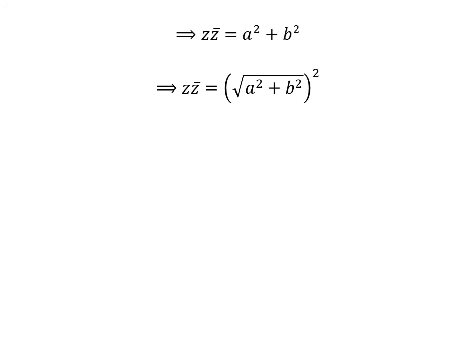The above statement can be rewritten as z times the conjugate of z is equal to the square of the square root of (a squared plus b squared). So, this implies z times the conjugate of z is equal to the square of the modulus of z. Thus, we have proved what we set out to prove.